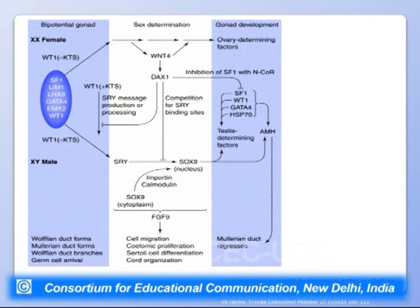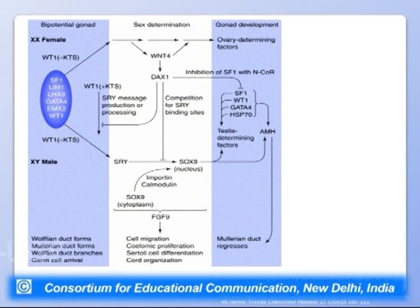SOX9 activity releases testis-determining factors including SF1, WT1, GATA4, and HSP70 (heat shock protein 70), leading to testis formation. These factors also promote production of anti-Müllerian hormone (AMH), causing Müllerian duct regression. Thus, from bi-potential gonads, the Müllerian ducts regress, male structures form, and a male is produced.